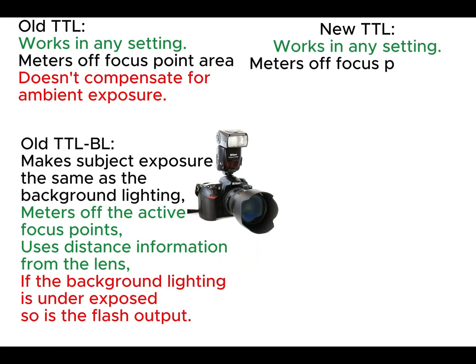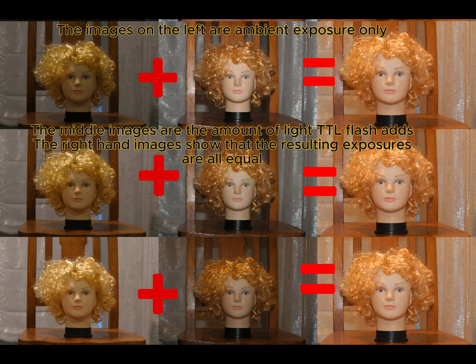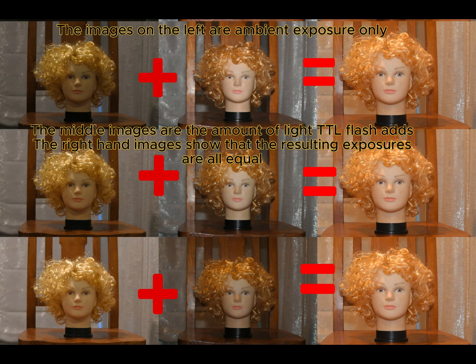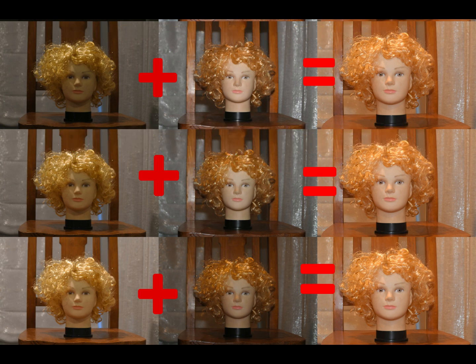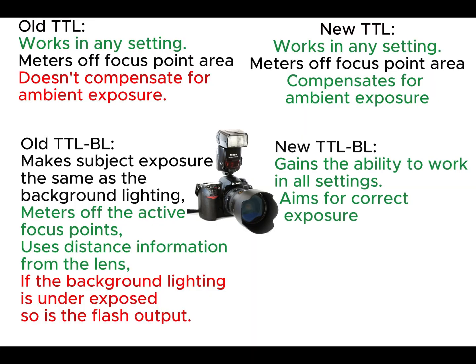Nikon technicians add TTL BL's ability to balance ambient with flash to plain TTL mode. The images on the left are ambient exposure only. The middle images are the amount of light TTL flash adds. The right-hand images show that the resulting exposures are all equal. Nikon technicians also add TTL's ability to work in all situations to TTL BL mode.